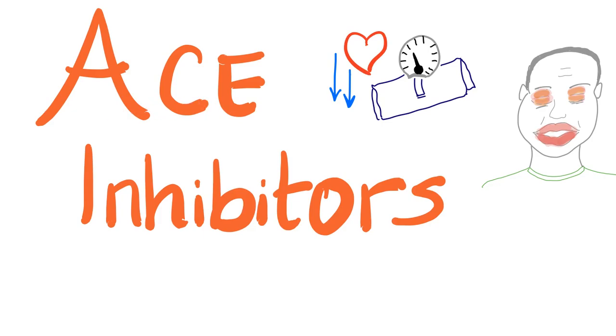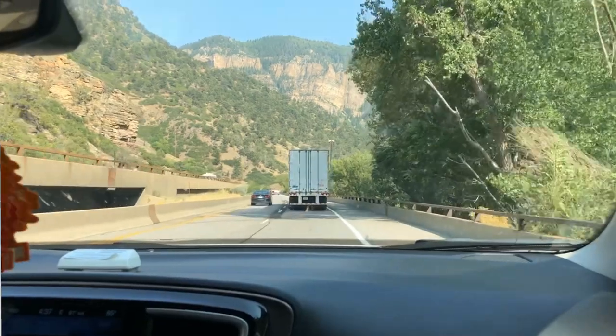When you inhibit the ACE, good things happen, such as controlling your blood pressure, and bad things happen, such as cough, angioedema, and hyperkalemia. Now, let's get started.